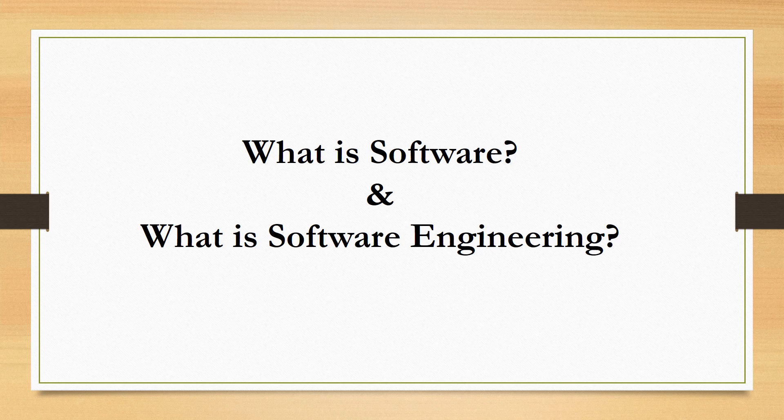Moving towards the concept of software engineering: software engineering basically defines how we can develop a particular software — what kind of processes are involved, how those processes are going to be implemented. It defines the methods to build software and also defines the tools, both hardware and software, required to develop it.